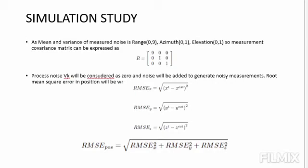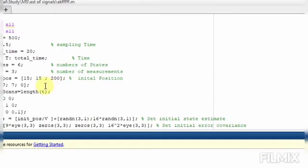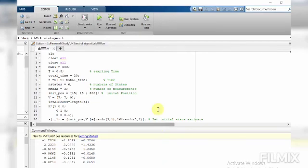The process noise v_k will be considered as 0, and noise will be added to generate noisy measurements. The root mean square error will be computed with respect to x, y, and z: RMSE_z = √(mean((z_target − z_estimated)²)). The overall position RMSE will be: RMSE_position = √(RMSE_x² + RMSE_y² + RMSE_z²).